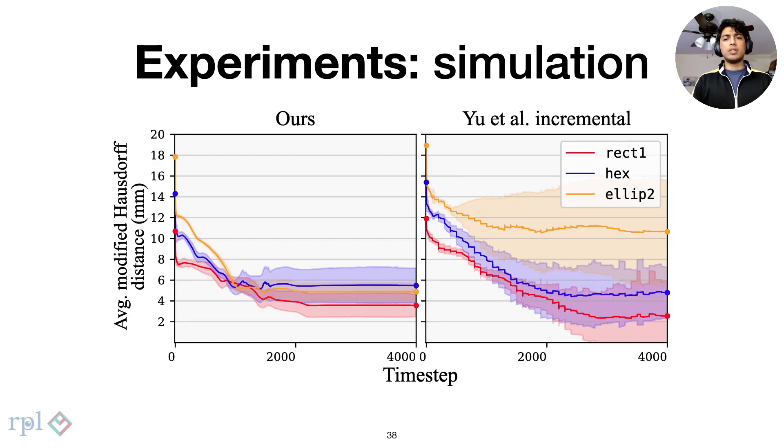We compare the Hausdorff distance as a measure of shape reconstruction. This is compared against our benchmark, the incremental version of Yu and others. While performance is similar for polygons such as a square, our method performs better for smooth and arbitrary shapes such as the ellipse.